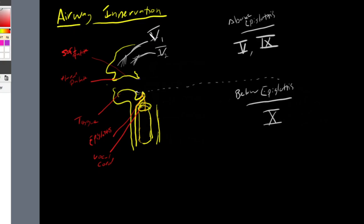Following this pattern of V1 and V2, the third branch of cranial nerve 5 is going to supply the anterior two-thirds of our tongue. That is labeled V3, the mandibular division of our trigeminal nerve, and it provides sensation to the anterior two-thirds of the tongue.